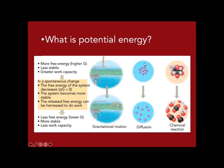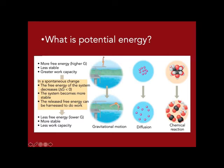With diffusion, if you have a bunch of molecules pushed into a single corner, they'll gradually move apart by random motion. The process of having stuff together versus being diffused is a form of potential energy. Similarly, a complex structured molecule has potential energy that can be converted into kinetic energy as that large molecule is broken into small ones. Things go from a state of higher potential energy to lower — from higher Gibbs free energy to lower, more stable states with less capacity to do work.